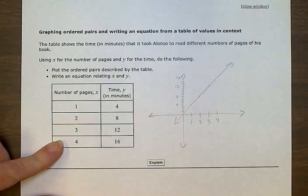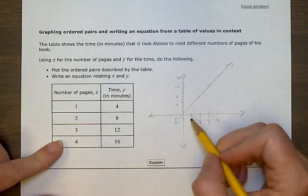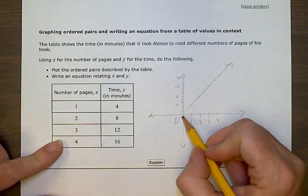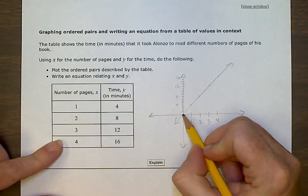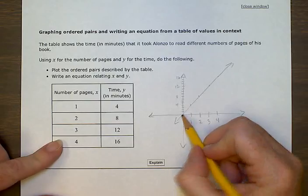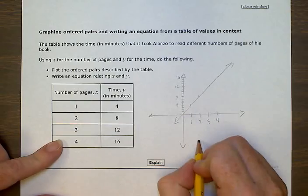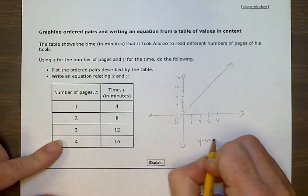So I plotted the ordered pairs and now I have to write an equation. Where it crosses the y-axis is at 0. When we read 0 pages, it's taking 0 minutes. So that is really the starting point of this graph. The y-intercept is 0.